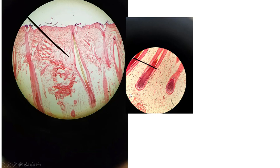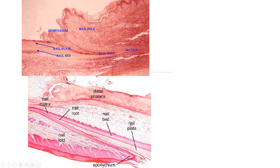Looking at a microscope slide of hair — you see the hair follicle here, and when you look closely you can actually see the papilla of the hair. The matrix would be right here with dividing cells pushing out other structures. If you look closely you also see some sebaceous glands right here, which secrete oil into the hair follicle.